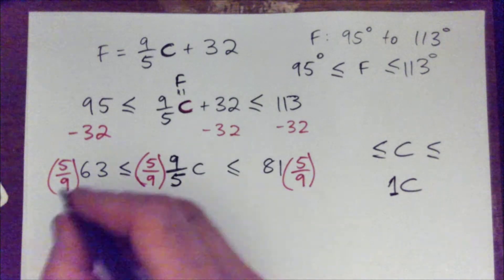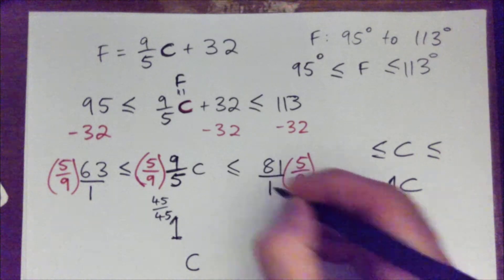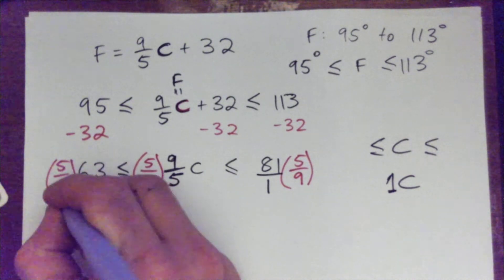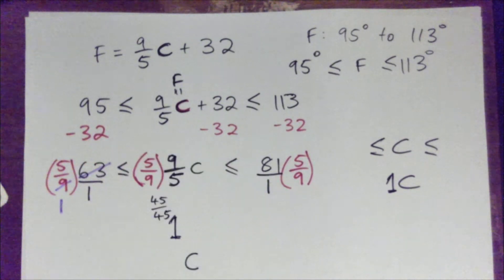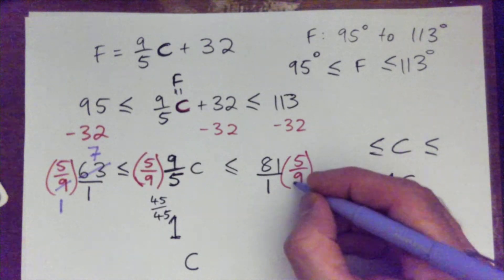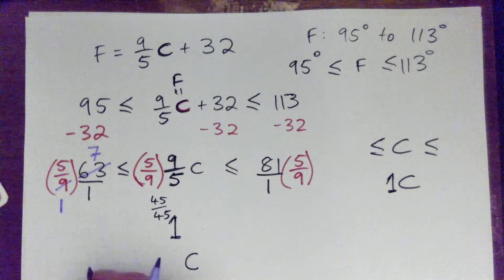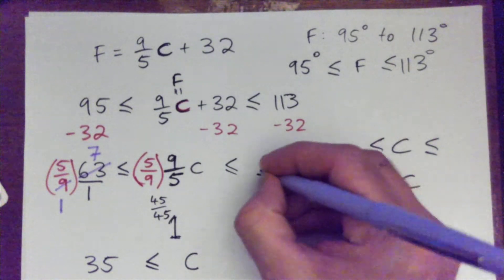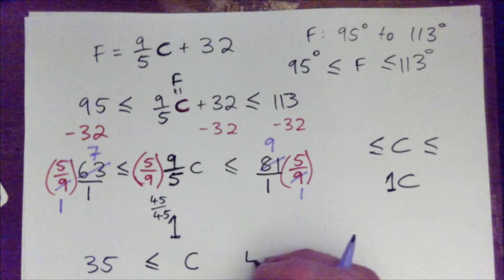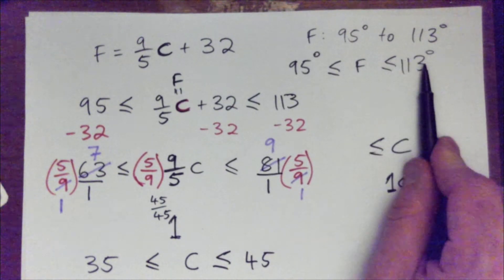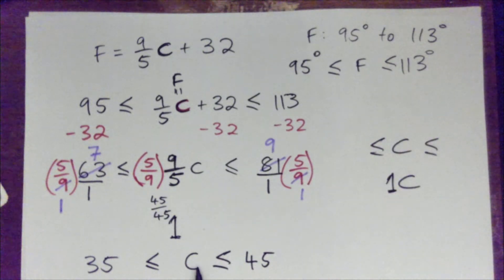Now when doing this, write 63 as 63 over 1 and 81 as 81 over 1 — just because it's neat and helps you avoid mistakes. Now cross-cancel common factors: 9 into 9 goes once, 9 into 63 goes 7 times, so 5 times 7 is 35. And on the other side, 9 into 9 goes once, 9 into 81 goes 9 times, so 5 times 9 is 45. So the Fahrenheit range being between 95 and 113 is the equivalent of the Celsius range being between 35 and 45.